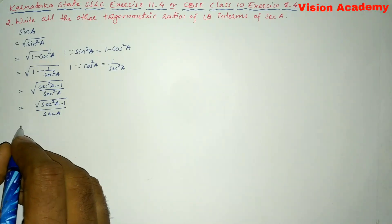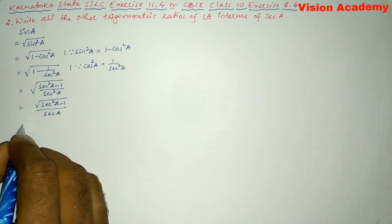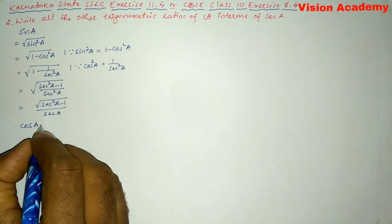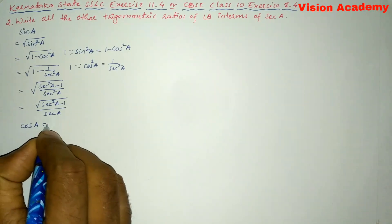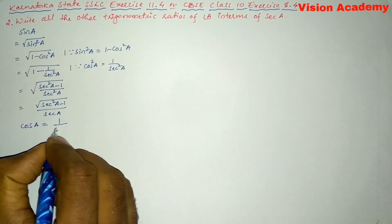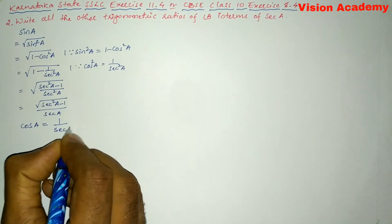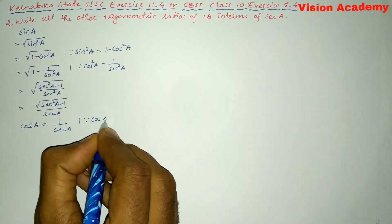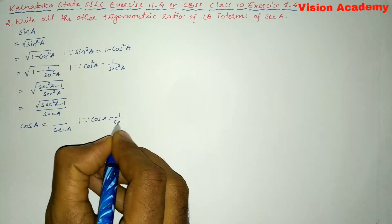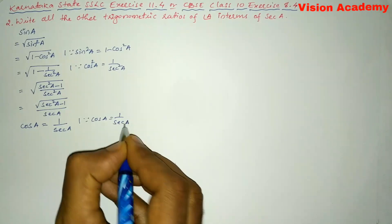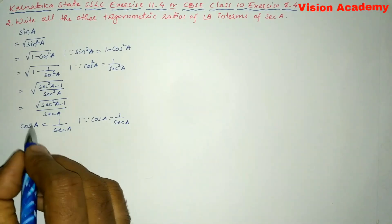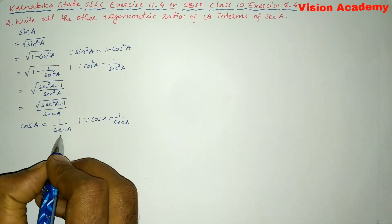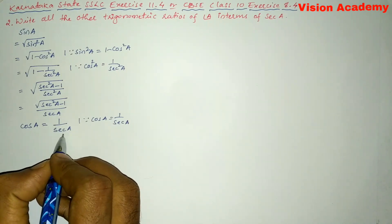Next, let us move on to the next trigonometric ratio, that is cos A. Cos A can also be written as 1 by sec A, because cos A = 1/sec A. So we have written cos A in terms of sec A.